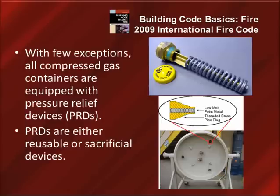On the bottom, you see an end of a one-ton cylinder that uses a fusible plug relief device, where the fusible plug uses a predictable low melt point metal. If the cylinder is involved in fire or heated above a given temperature — usually either 212 to 250 degrees — the metal will melt and thus allow the cylinder contents to be relieved to atmosphere. It will not reclose.